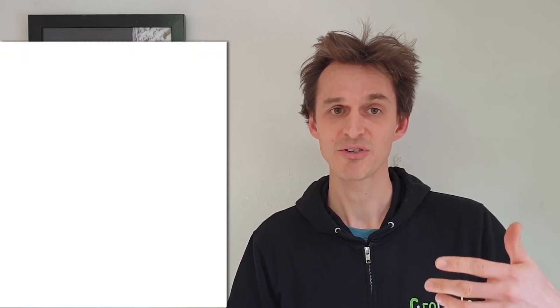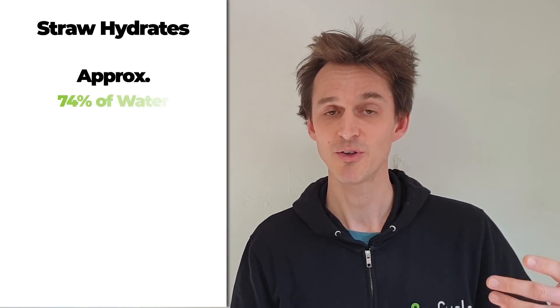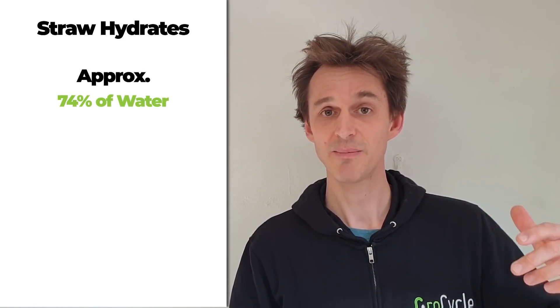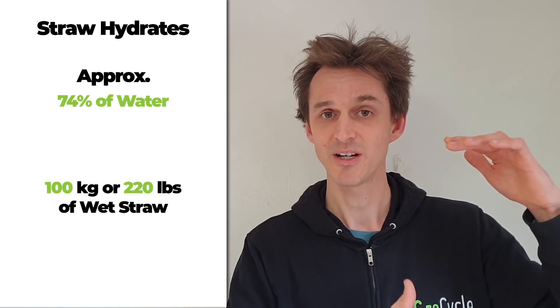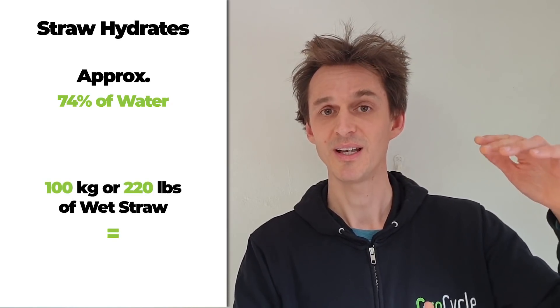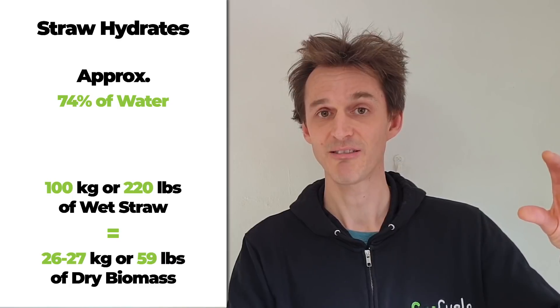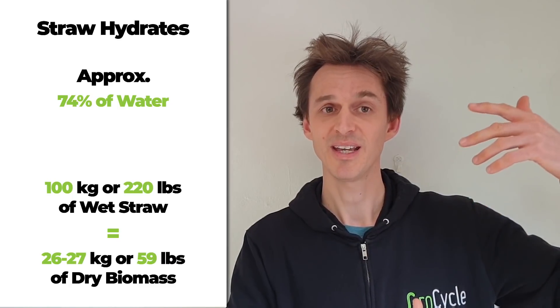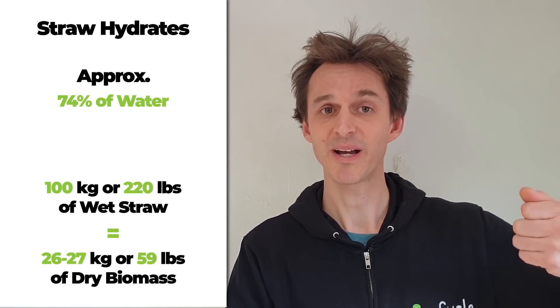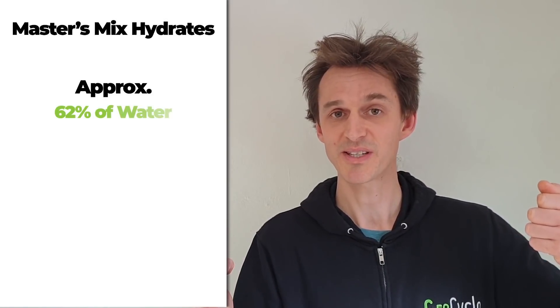The main difference lies in the hydration level of the substrate. Straw hydrates at a fairly high level of around 74 percent water content, meaning that if you have 100 kilograms of wet weight straw you've only got about 26 to 27 kilograms of dry biomass. Compare that to Master's Mix, which hydrates at a much lower rate of around 62 percent water content.